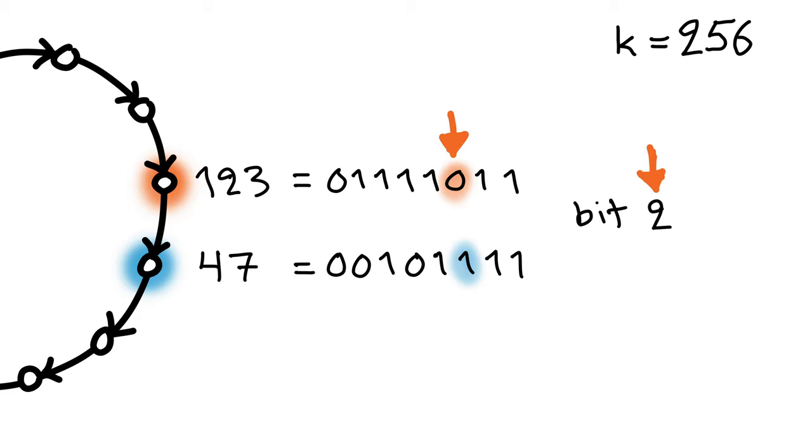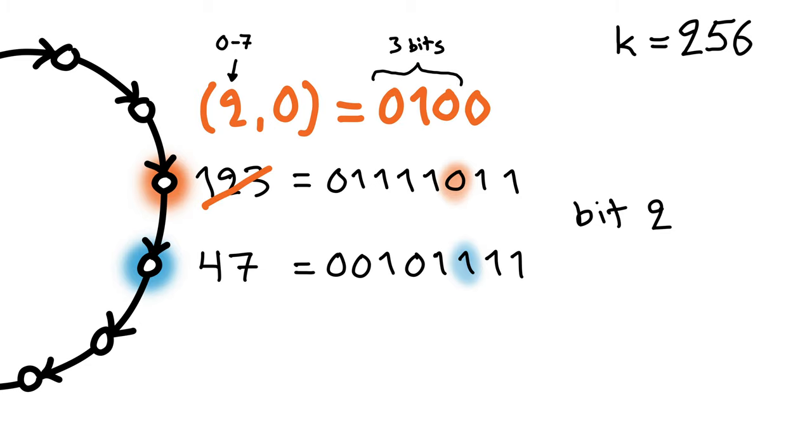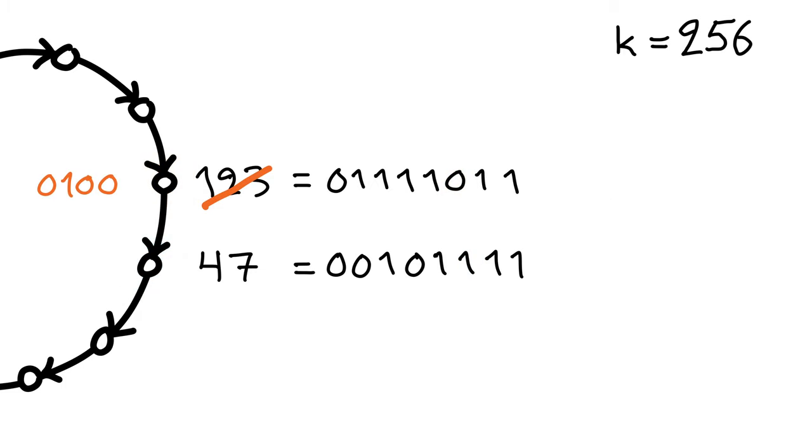My new color will be this pair, index, bit value, 2, 0. Of course, we can represent this again as a binary number. For example, just write the index in binary, and concatenate it with the bit value. The index is something between 0 and 7, so it fits in 3 bits. We write 2 in binary, it's 0, 1, 0, and add the bit value 0. And that's it, my new color is in binary, 0, 1, 0, 0.